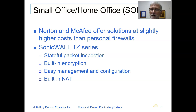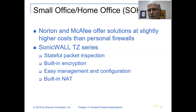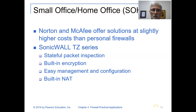For your small office — that was for a single machine — for the small office home office (SOHO), both Norton and McAfee offer solutions at a slightly higher cost. The SonicWall TZ series is another option you may not have heard about. It offers stateful packet inspection, built-in encryption, is easy to manage, and has built-in network address translation. It is one that you could add to your list to investigate.